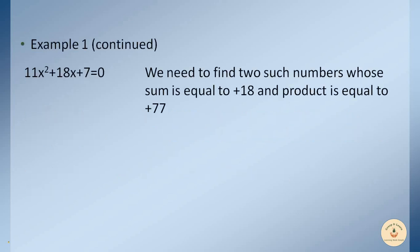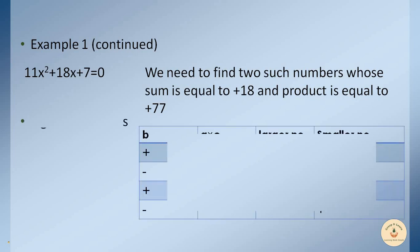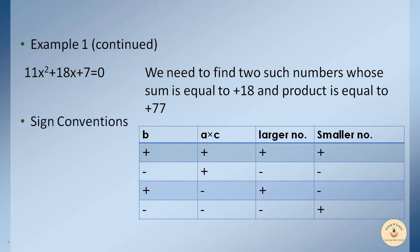To solve using factorization, we need to split the middle term into two numbers whose sum equals +18 and product equals 77. To find the signs, we use a sign convention table. Our case falls into the first row: b is positive and a×c is positive, so both numbers will have positive signs.